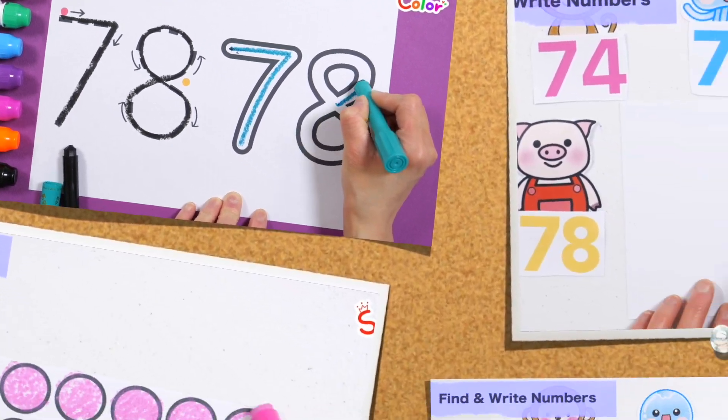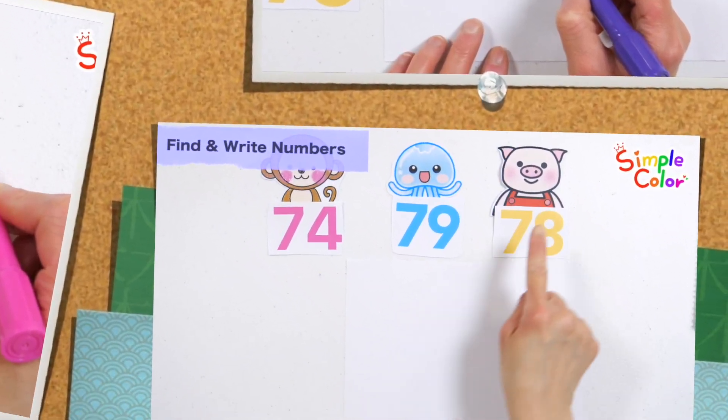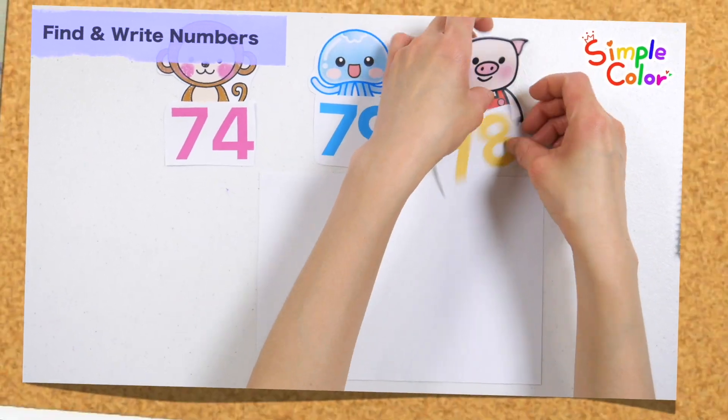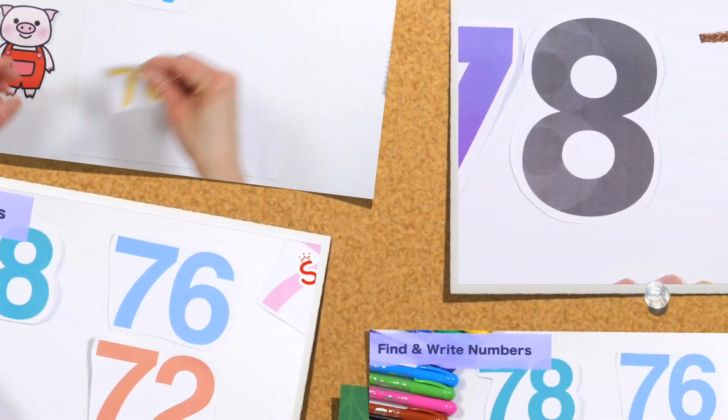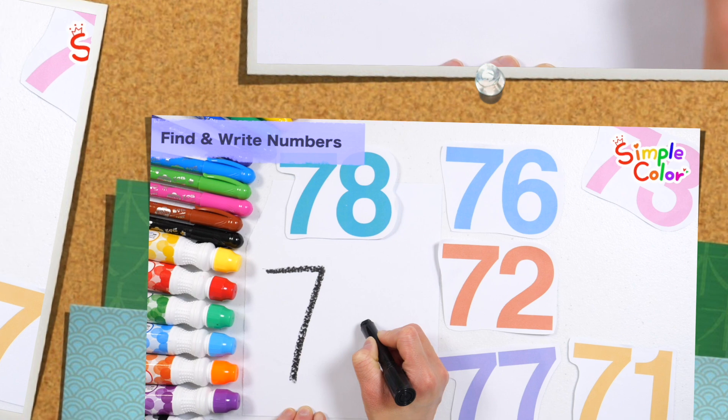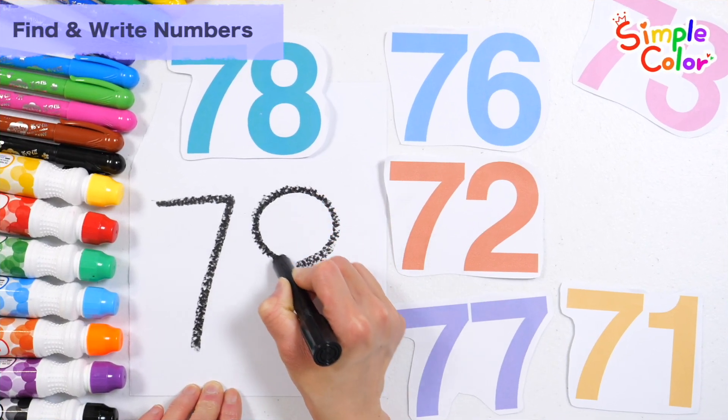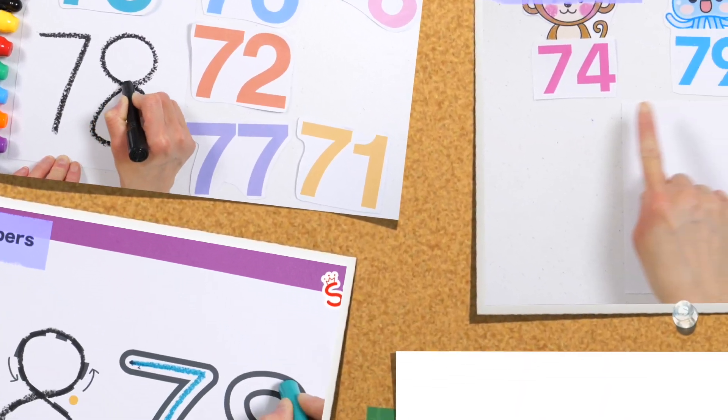Today, we will learn the number 78. Learn how to write by tracing arrows, color circles to match the numbers, find and write down numbers, and learn numbers in a variety of fun ways.